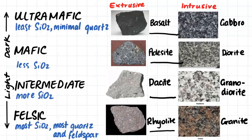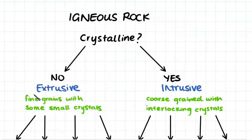These are the main types of igneous rock that we need to know, and they all sit on a continuum according to how much silicon is in the rock. Here is a quick flowchart to see how we classify igneous rocks.